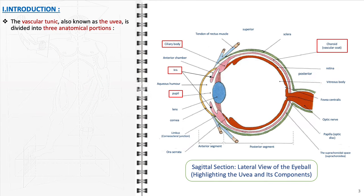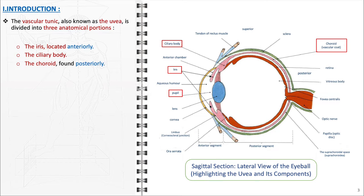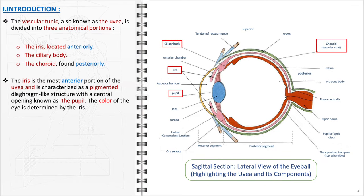The uvea is the vascular layer of the eye and is composed of three distinct anatomical sections. The iris, positioned at the front, is the most anterior segment of the uvea. It is characterized by its pigmentation and diaphragm-like structure, with the pupil forming the central opening. The iris's color determines a person's eye color.